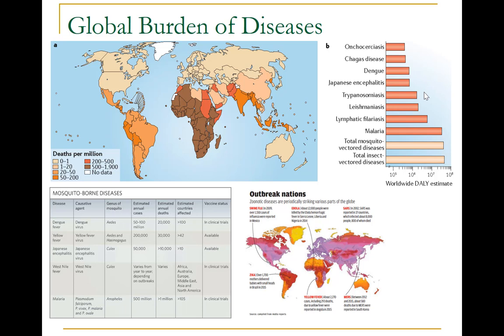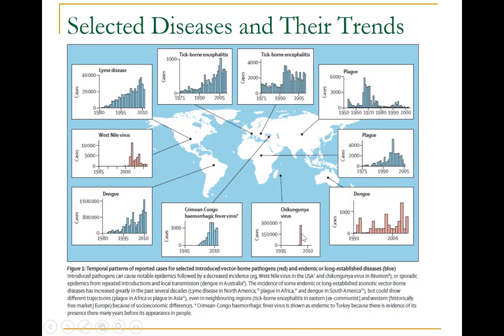On the other hand, outbreaks of new diseases such as SARS in 2002, swine flu in 2009, Ebola in 2014, MERS between 2012 and 2015, and Zika in 2015 have claimed lives and overwhelmed health systems in many countries. In this graph you can see temporal patterns of reported cases for selected introduced vector-borne diseases shown in red and endemic or long-established diseases shown in blue. Introduced pathogens can cause notable epidemics, as seen in the U.S. from West Nile virus.